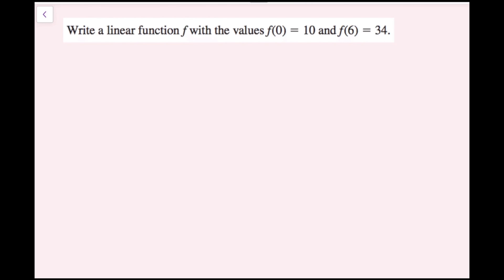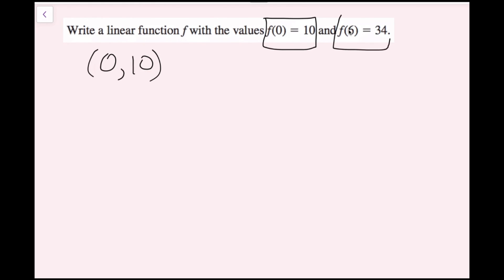Write a linear function f with the values f of 0 equals 10 and f of 6 equals 34. We're in function notation, but that's fine. The inputs are inside the parentheses and the outputs are what the function equals. So f of 0 equals 10 corresponds to the ordered pair 0, 10, and f of 6 equals 34 corresponds to the point 6, 34.